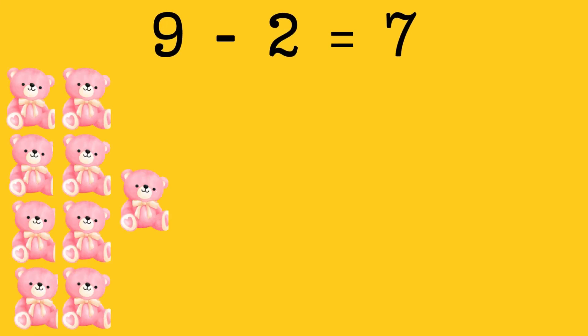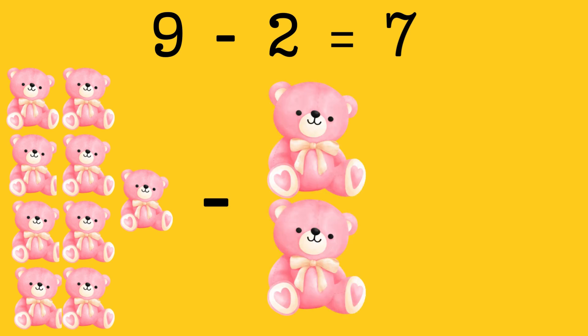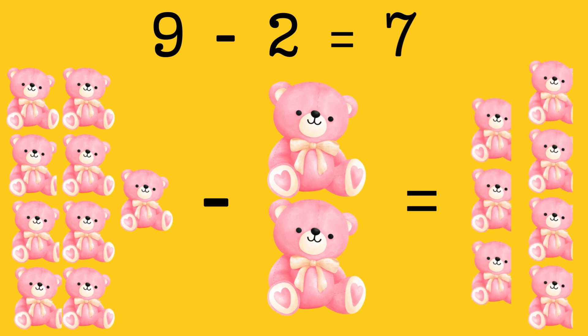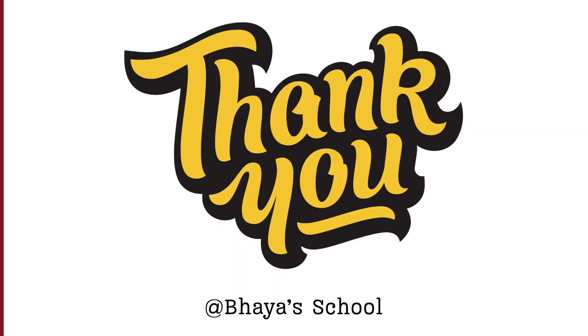9 minus 2 equals 7. Let's say you have 9 toys and you gave 2 toys to your brother. How many toys left? Correct, 7 toys.